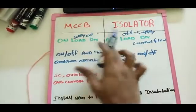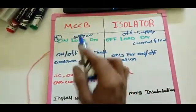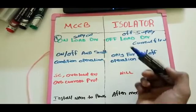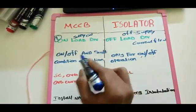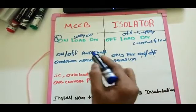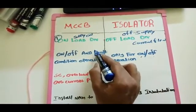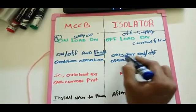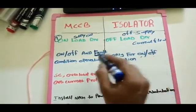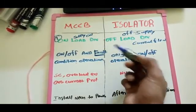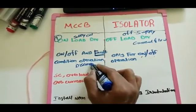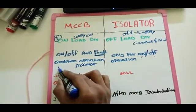Both the MCCB and Isolator have on/off operation like a switch. But the MCCB also has fault condition operation — if any fault occurs, the MCCB acts to disconnect the circuit. This includes overcurrent, overvoltage, overload, and short circuit current. The MCCB — Molded Case Circuit Breaker — disconnects the circuit under fault conditions, isolating both healthy and faulty circuits.